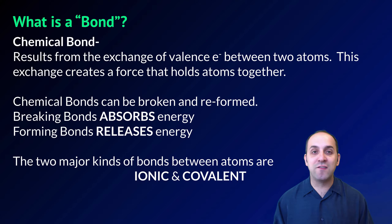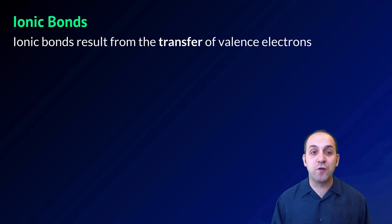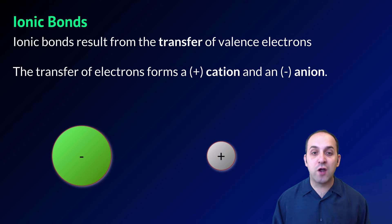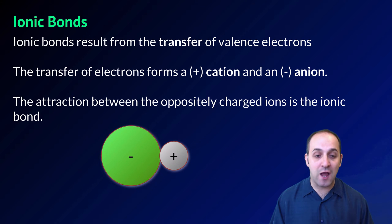The two major kinds of bonds that we're going to be dealing with in this class are ionic bonds and covalent bonds. This discussion deals with ionic bonds. An ionic bond results from the transfer of valence electrons. The transfer of electrons forms a positively charged cation and a negatively charged anion. Because opposite charges attract, that's what makes the ionic bond.